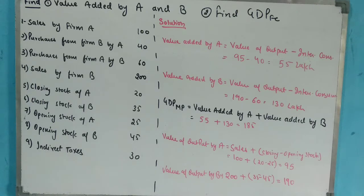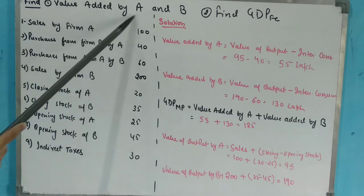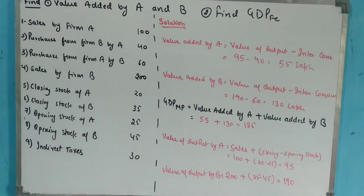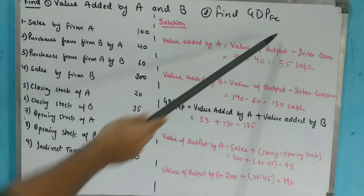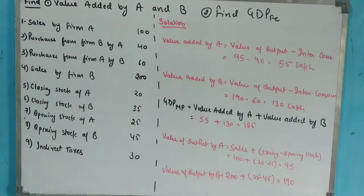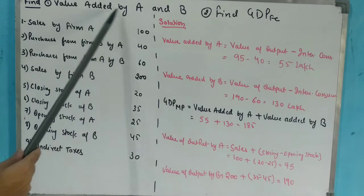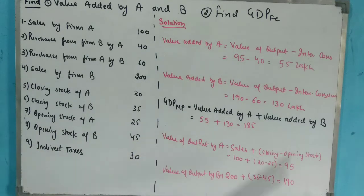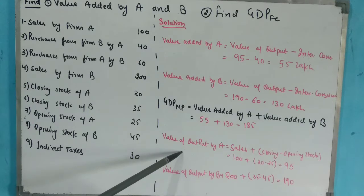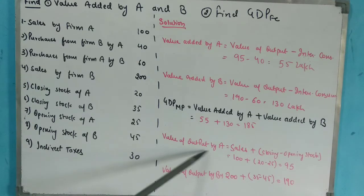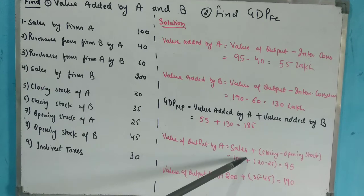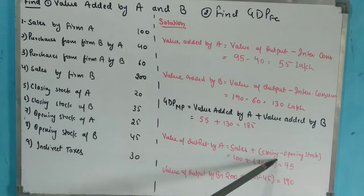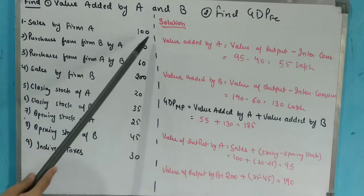The question asks us to find the individual Value Added (GDP at MP) for A and B, and then find Gross Domestic Product at Factor Cost. Let's start with Value Added by A. Its formula is: Value of Output minus Intermediate Consumption. Value of Output by A = Sales plus Change in Stock (Closing minus Opening Stock).